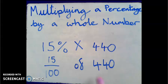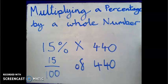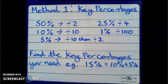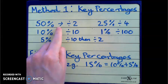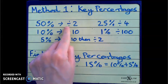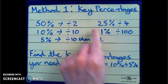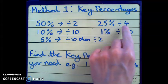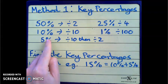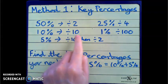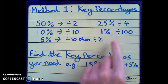Let's look at our first method for solving this type of calculation. This is Method 1, and that's finding it using key percentages. Our key percentages: 50% we can find by dividing by 2, we can find 25% of a number by dividing it by 4, we can find 10% of a number by dividing by 10, and we can find 1% of a number by dividing by 100.